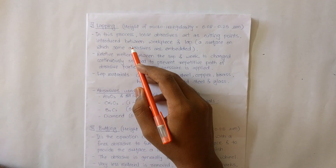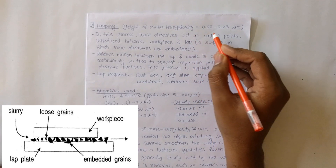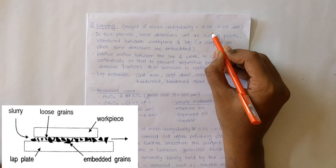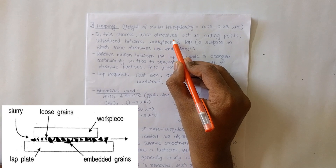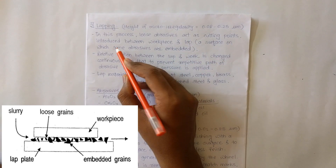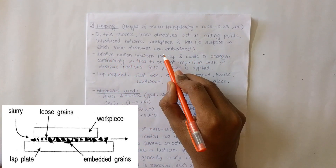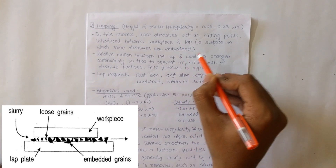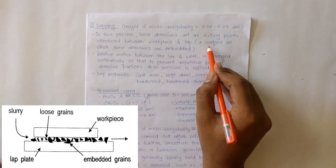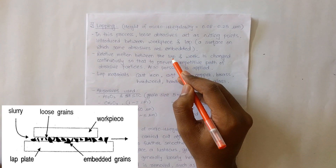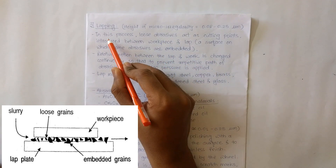The next process is the lapping process. In lapping, the height of micro irregularities of the finished surface is 0.08 to 0.25 micrometers. In this process, loose abrasives act as cutting points, which are introduced between the workpiece and a lap. A lap is a surface on which abrasives are already embedded, helping remove material and finish the workpiece.